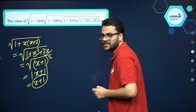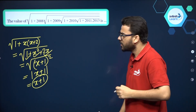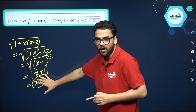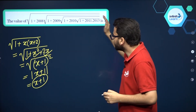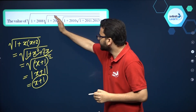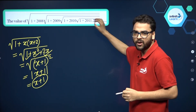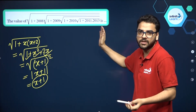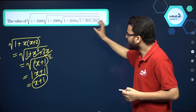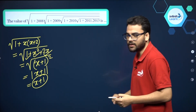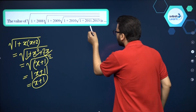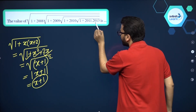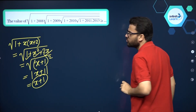So this equals X plus 1. Now you just start using this formula and start calculating from the last square root — the innermost one. Let us start doing this. You see it is of the form X into X plus 2.